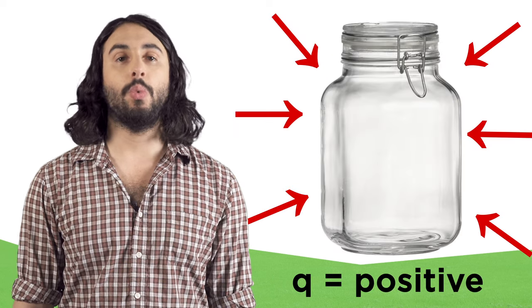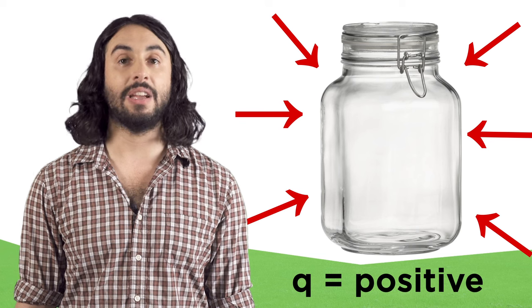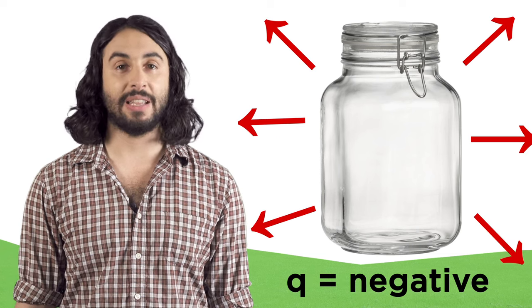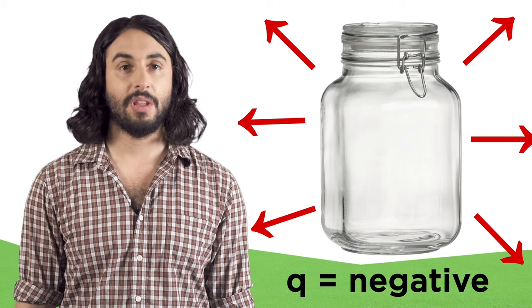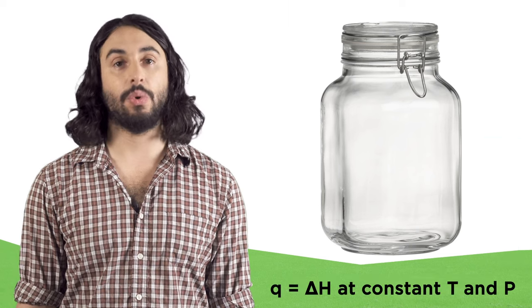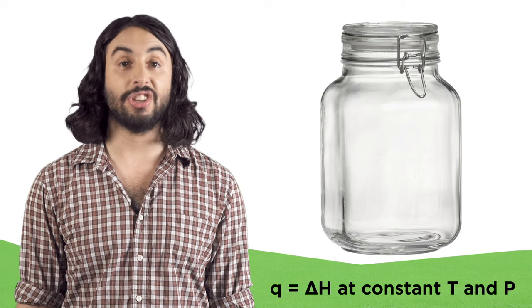For a system, q will be positive if heat is being absorbed by the system, and it will be negative if heat is being released by the system. When temperature and pressure are constant, q equals delta H, the change in enthalpy.